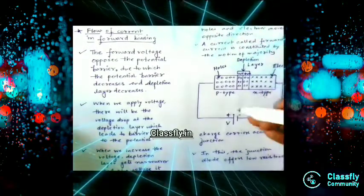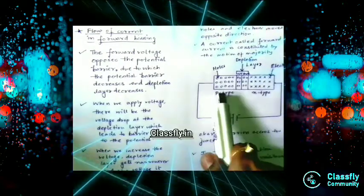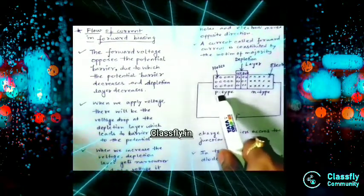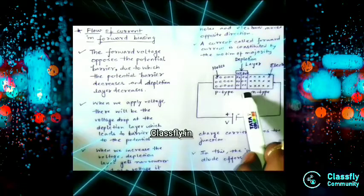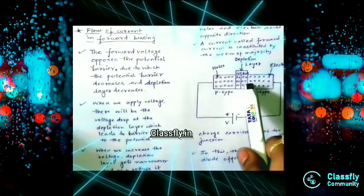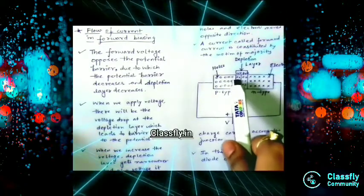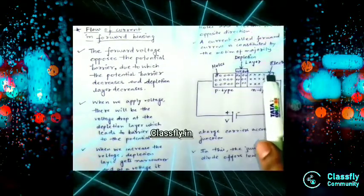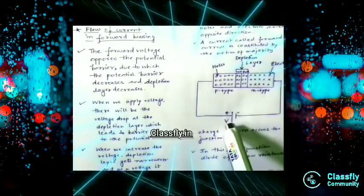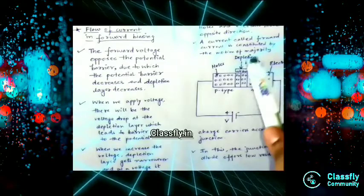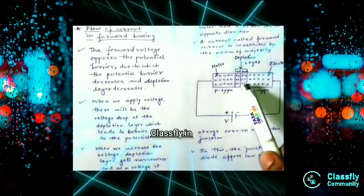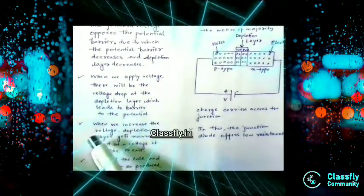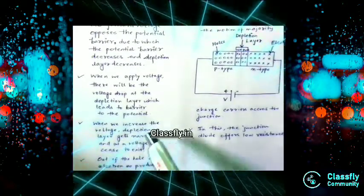...the depletion layer forms because some electrons from the N type move to the P type, and some holes from the P type move to the N type. When holes move to the N type it becomes positive there, and when electrons move it becomes negative, which causes the depletion layer. This charge difference is the potential difference that gives us the depletion layer.